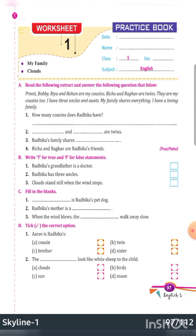Fill in the blanks. Number one: dash is Radhika's pet — Bruno, B-R-U-N-O, Bruno. Number two: Radhika's mother is a dash — homemaker, or you can say housewife. Number three: when the wind blows, they walk away slow — who walks away slow? Clouds.